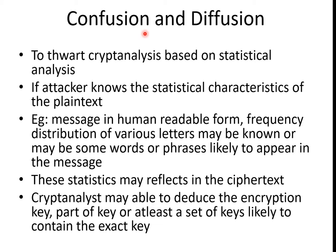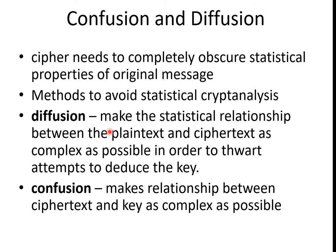The next topic is Confusion and Diffusion. If we have a plaintext with statistical behavior, we can compare it to the plaintext. For example, if we see the same letter, we compare it to E, A, or vowels. If we have human-readable text, we can compare it to English letter frequencies. We need to break the cryptanalysis. The statistical relationship between plaintext and ciphertext is called diffusion. Confusion is the statistical relation between the ciphertext and the key.